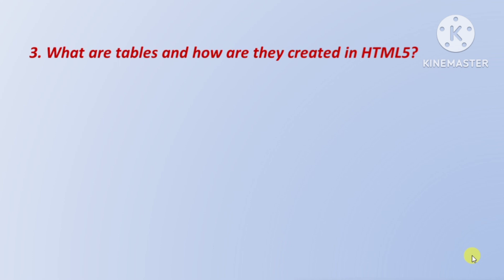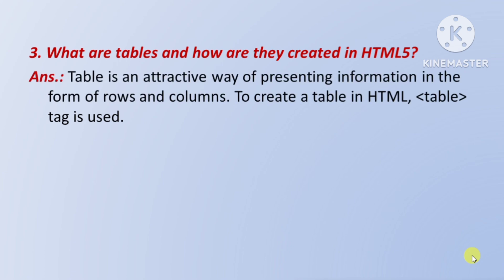Next question: what are tables and how are they created in HTML5 — tables kya hain aur kaise HTML5 mein create hote hain? Answer: a table is an attractive way of presenting information in form of rows and columns — table information ko rows aur columns ke form mein present karne ka ek attractive tarika hai. To create a table in HTML, the table tag is used.